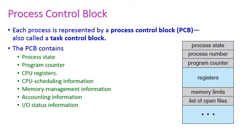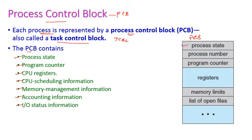Next, let us see the process control block (PCB), otherwise called the task control block (TCB) — both are the same. Each process is represented by a PCB. The PCB contains: process state, program counter, CPU registers, CPU scheduling information, memory management information, accounting information, and I/O status information. In the PCB diagram we have process state, process number, program counter, CPU registers, memory limit, and list of open files — everything is maintained by the process control block.